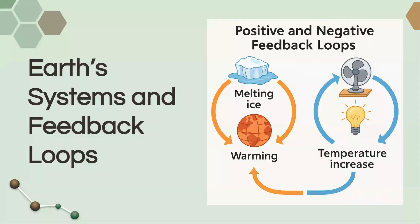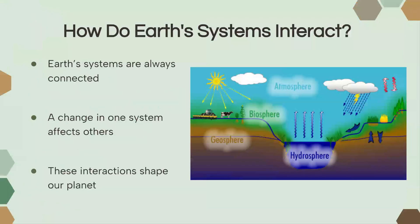Hi everyone, so today we're going to talk about Earth's systems and feedback loops, so let's get started. So how do Earth's systems interact? Well, all Earth's systems are connected — they are the parts that make the whole Earth's system. One little change to any part of the Earth's systems, for instance the atmosphere, can cause multiple changes to the other Earth's systems as well. And these interactions are what help shape our planet's dynamics.